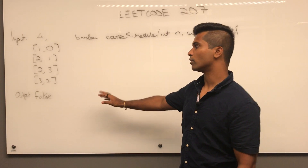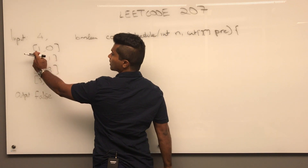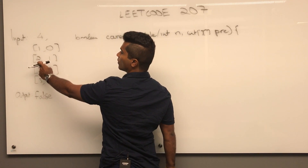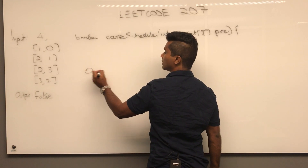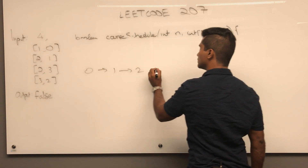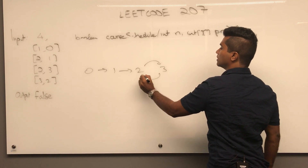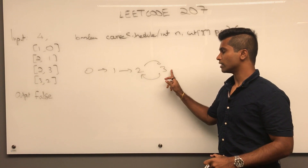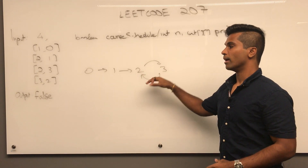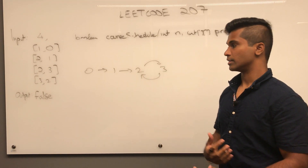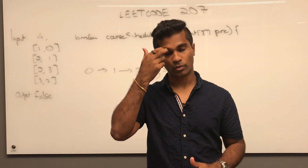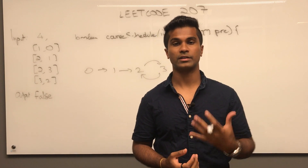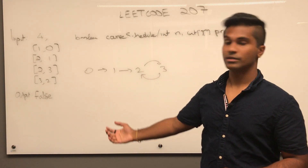In this case we cannot complete it so we return false, because one-comma-zero means you have to take zero before taking one, and two-comma-one means you have to take one before taking two. You can see there's a cycle in two and three, which means you have to take two before three and three before two — because there's a cycle, we cannot complete it.